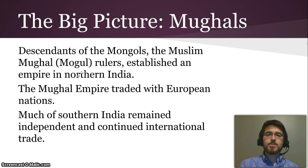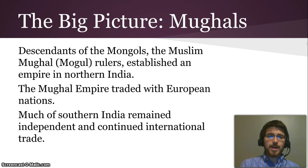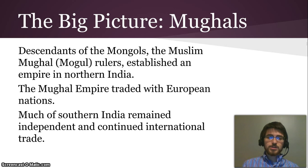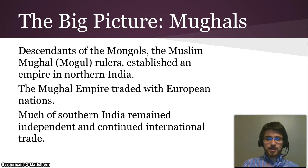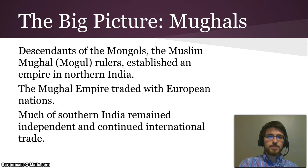Here's the big picture for the Mughals. The descendants of the Mongols, the Muslim Mughal rulers — you can say it either way — established an empire in northern India. This Mughal Empire traded with European nations. But much of the southern subcontinent of India remained independent and continued international trade on their own during this time period.